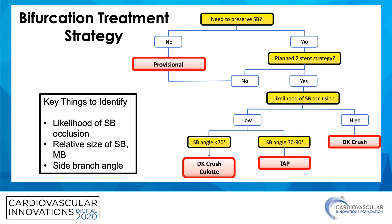If the likelihood that the side branch could be occluded by stenting across it is high, then a DK crush technique should be preferred because of the very low likelihood of losing a side branch with this technique. If the likelihood of losing the side branch is low, we then look at the side branch angle. If the angle is greater than 70 degrees, a T&P protrusion technique can often be used successfully. If the angle is less than 70 degrees, a DK crush or a coulotte technique could be considered.